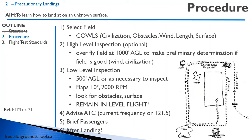You're going to do a low-level inspection. The way I tell people to do precautionary landings is just think of doing two circuits. Just like if you're coming in for landing, you're going to reduce your power, put your flaps down — let's say 10 degrees — but instead of coming in to land, you're just going to overfly the field in the direction you want to land at about 500 feet, or whatever altitude is necessary to inspect — it might be 100 feet, whatever you need.